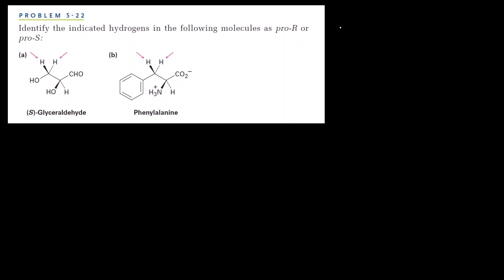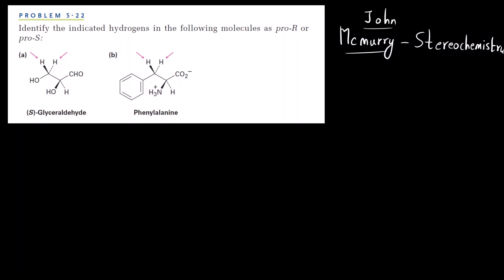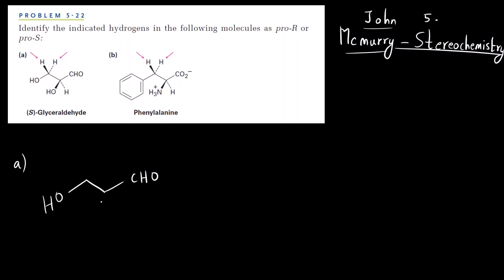Let us understand with one more question — this is from John McMurray, Chapter 5 Stereochemistry. Again we have to do the same exercise. Let us first write down the structure: we have OH, CHO, OH on the wedge bond, hydrogen on the dash bond, and another hydrogen on the wedge bond. We label the wedge bond hydrogen as HA and the dash bond hydrogen as HB. We have to find out the Pro R or Pro S notation for the indicated hydrogens.